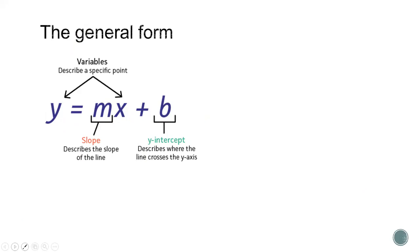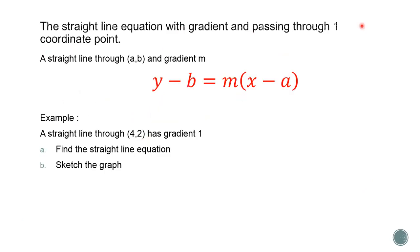Right, let's begin with the equations, this equation y minus b equals m times x minus a. If we have a problem such as this one, we're going to find a straight line. And we have the information, just a point and gradient. We need to use this formula y minus b equals m times x minus a.